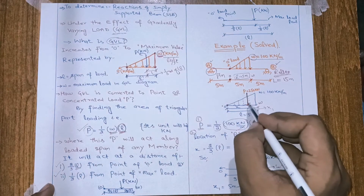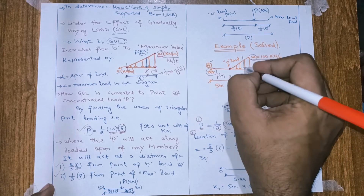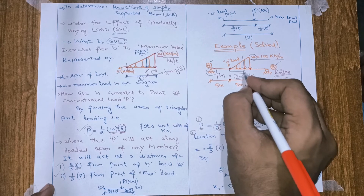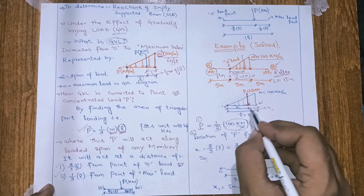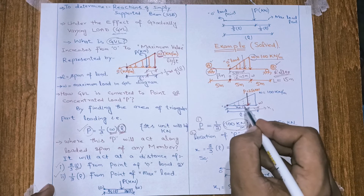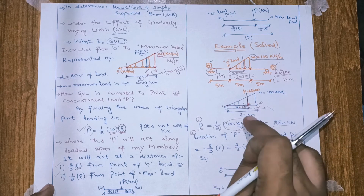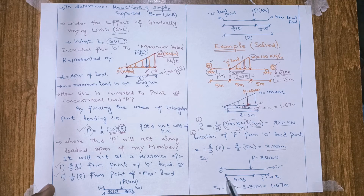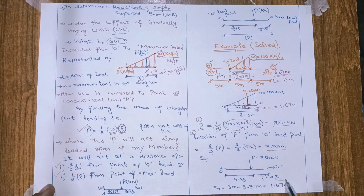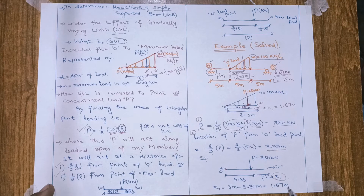The distance of P from the zero load point is 3.33 meters. Now we want to determine the other distance, x1. The whole span is 5 meters; x is 3.33 meters. If we subtract 3.33 from 5 meters, we get x1 equal to 1.67 meters. So from zero load point to P load point is 3.33 meters, and x1 — the distance from P to the maximum load point — is 1.67 meters.